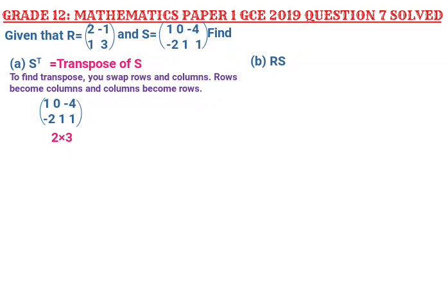Let me open the bracket of the matrix. What I will do is change the first row in this matrix — it will become the first column. So I am going to write 1 there, then 0 written down, then negative 4 down there. Now the first row has become the first column. The next thing is to change the second row to become the second column.